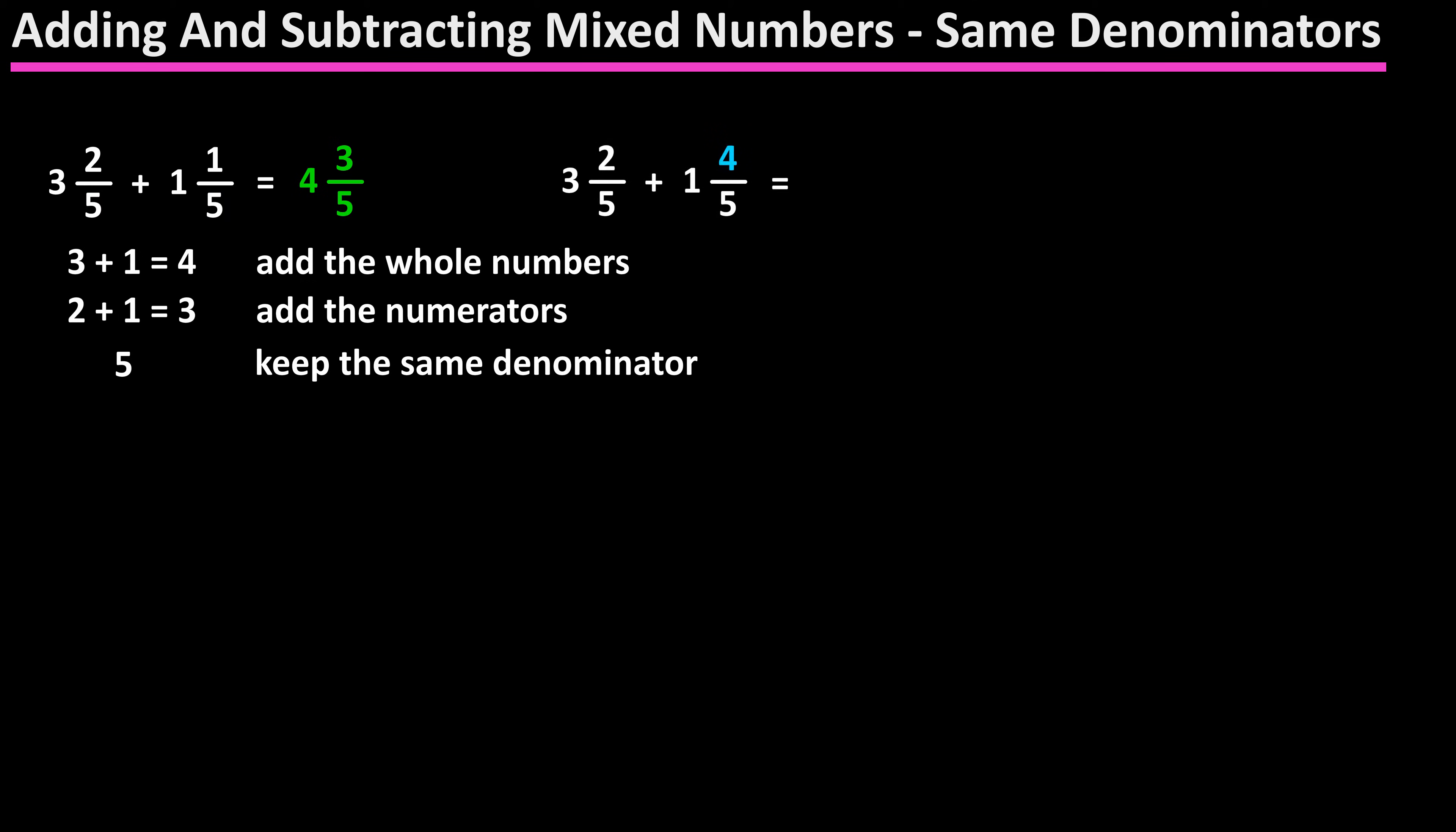Now, if the problem were 3 and 2 over 5, plus 1 and 4 over 5, our answer would be 4 and 6 over 5, which is an improper fraction. We would then convert the improper fraction to a proper fraction, and I've written that process out here on the screen.